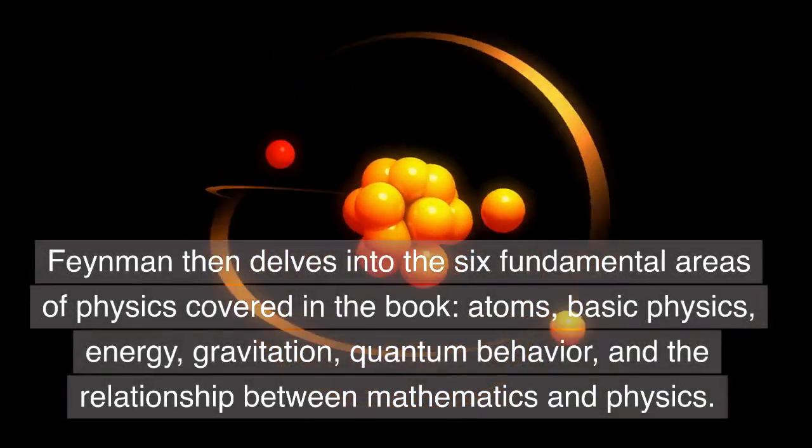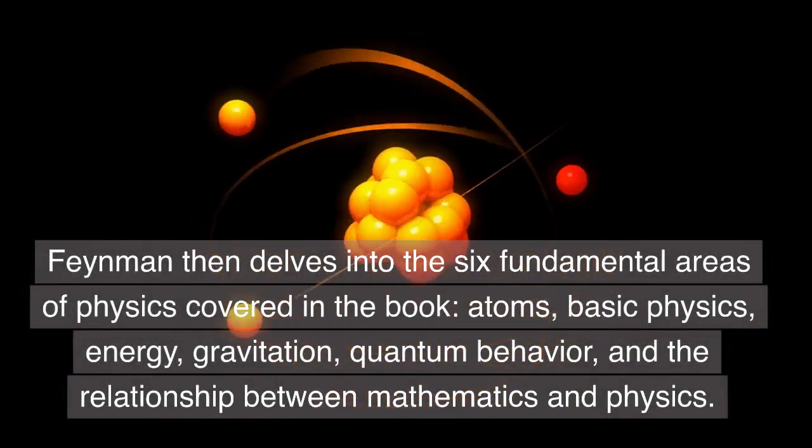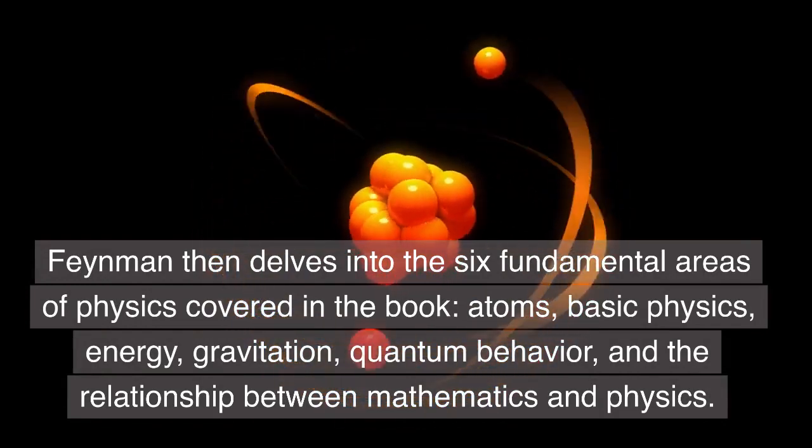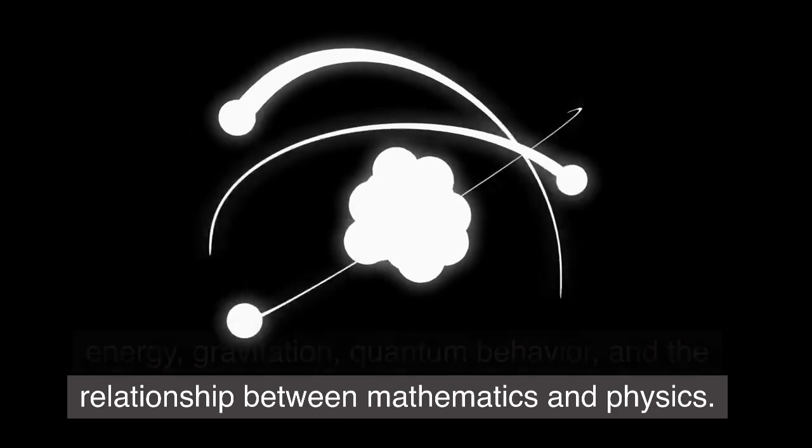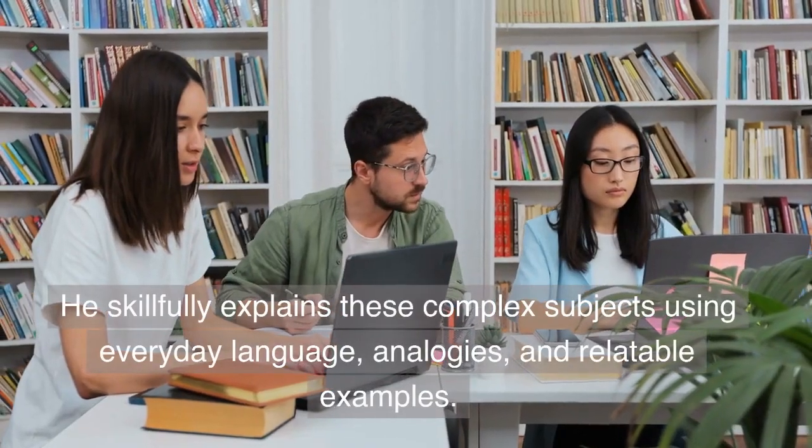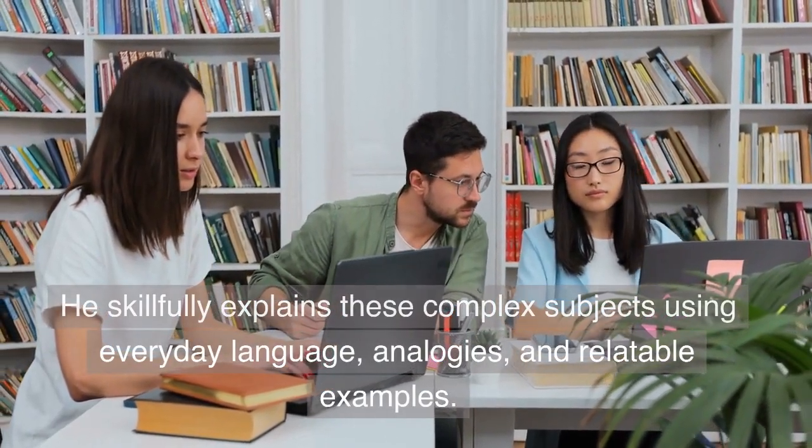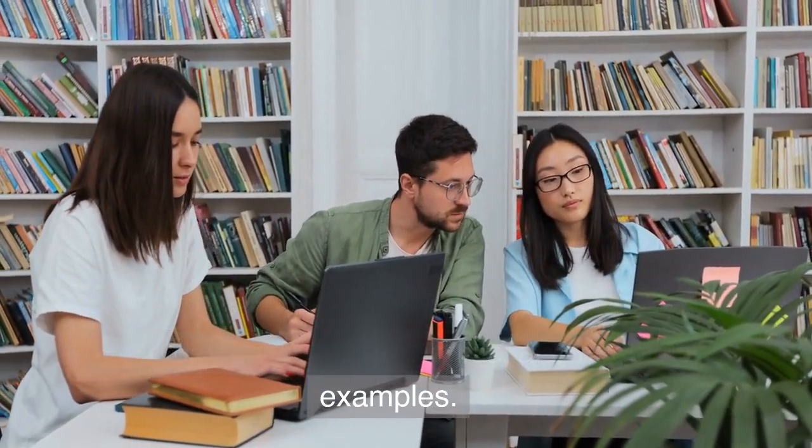Feynman then delves into the six fundamental areas of physics covered in the book: atoms, basic physics, energy, gravitation, quantum behavior, and the relationship between mathematics and physics. He skillfully explains these complex subjects using everyday language, analogies, and relatable examples.